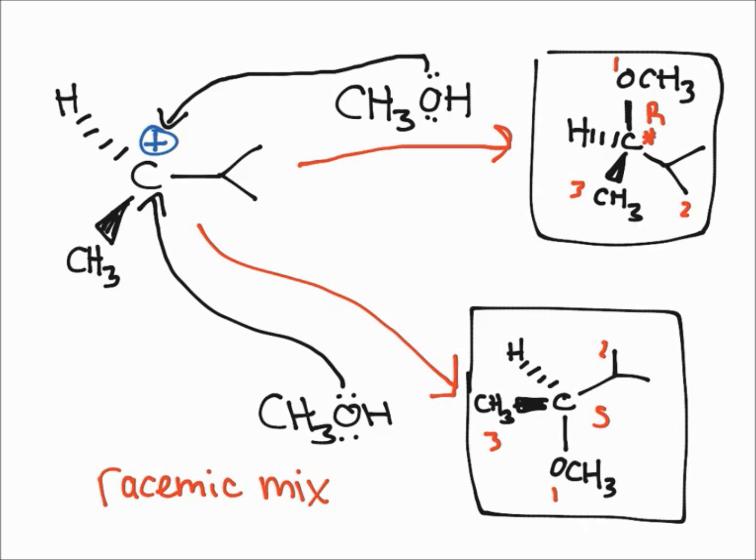That pretty much sums it up for SN1 stereochemistry. You just have to remember that the carbocation can be attacked from both sides, from above or below by the nucleophile, and depending on which side it attacks from, you could get a different configuration of the final molecule. I hope this video helped you. If it did, please give it a like and share it with your friends.